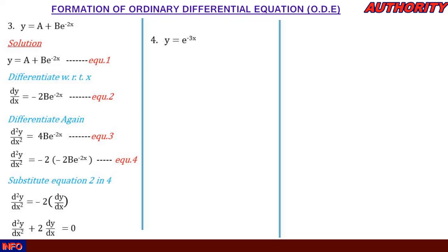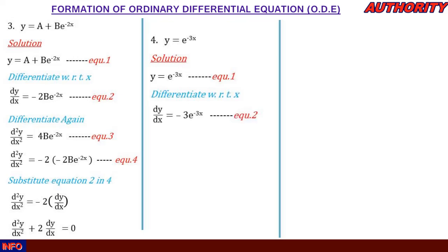For number four, y = e^(-3x). Call this equation 1. Differentiating: dy/dx = −3·e^(-3x). Call this equation 2. Factoring out −3: dy/dx = −3·(e^(-3x)). Call this equation 3.